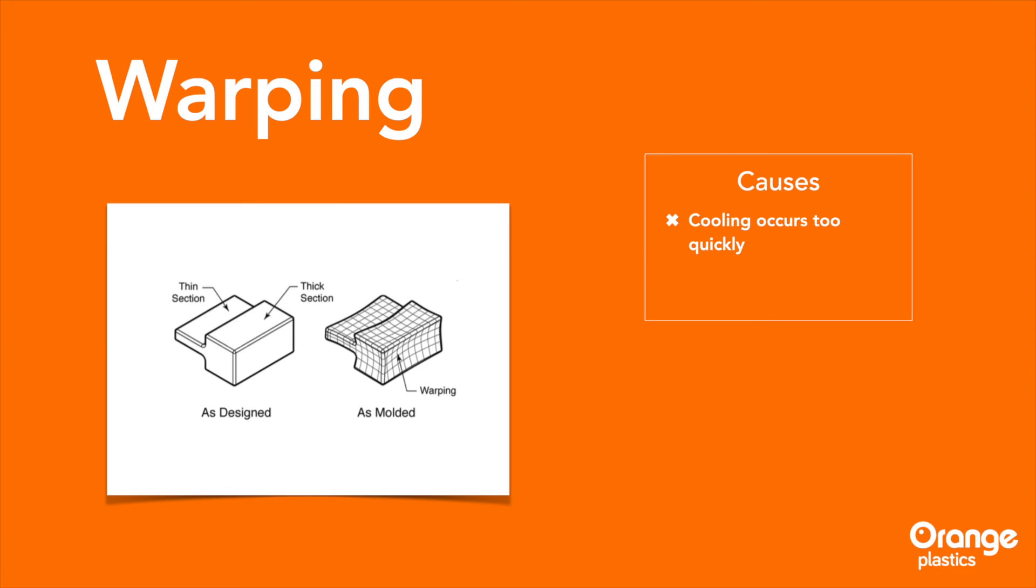Yet sometimes, the mold's actual design is the culprit when its walls are not of uniform thickness. In that case, you would need to redesign the mold with uniform wall thickness and part symmetry, preventing defects.